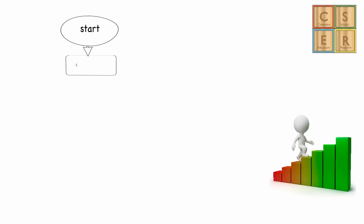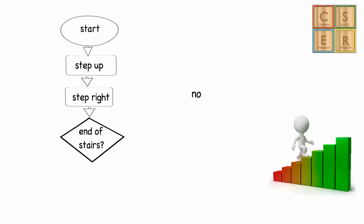First we indicate that we are starting a flowchart, which indicates the start of a sequence of instructions. Then we follow by our sequence of stepping up and stepping right instructions. If we have not yet reached the end of the stairs, then we want to keep going and therefore repeat the up and right actions.